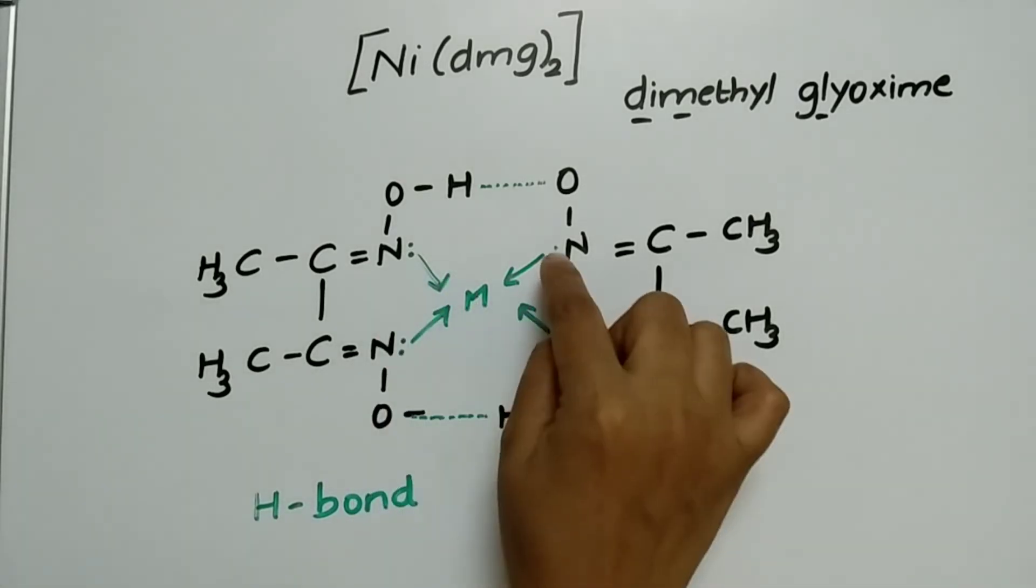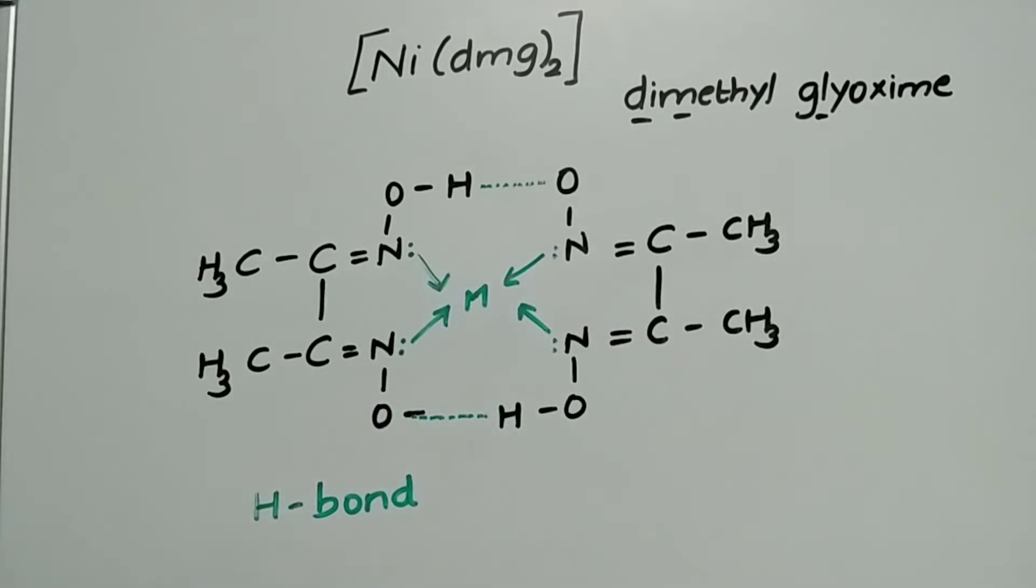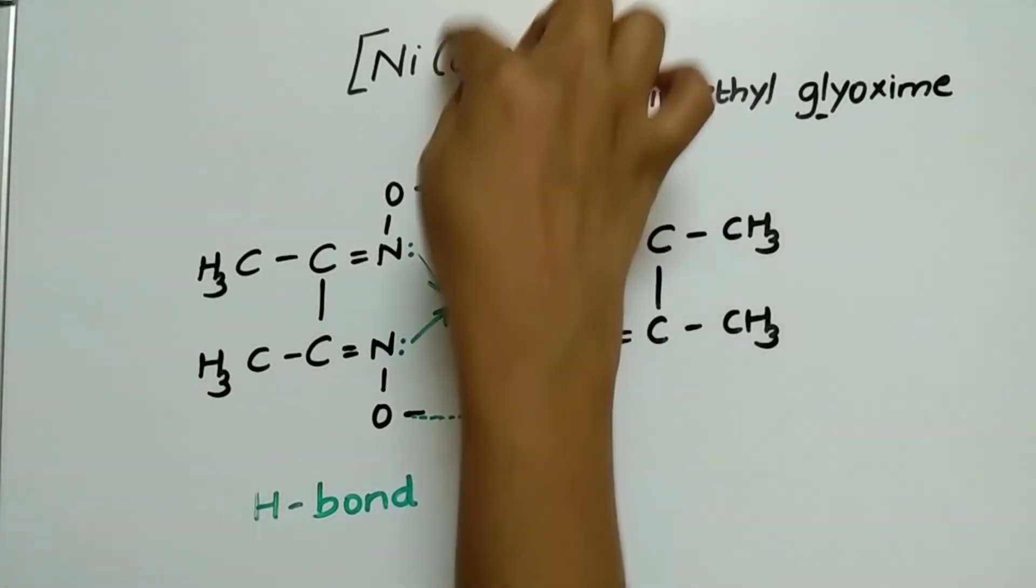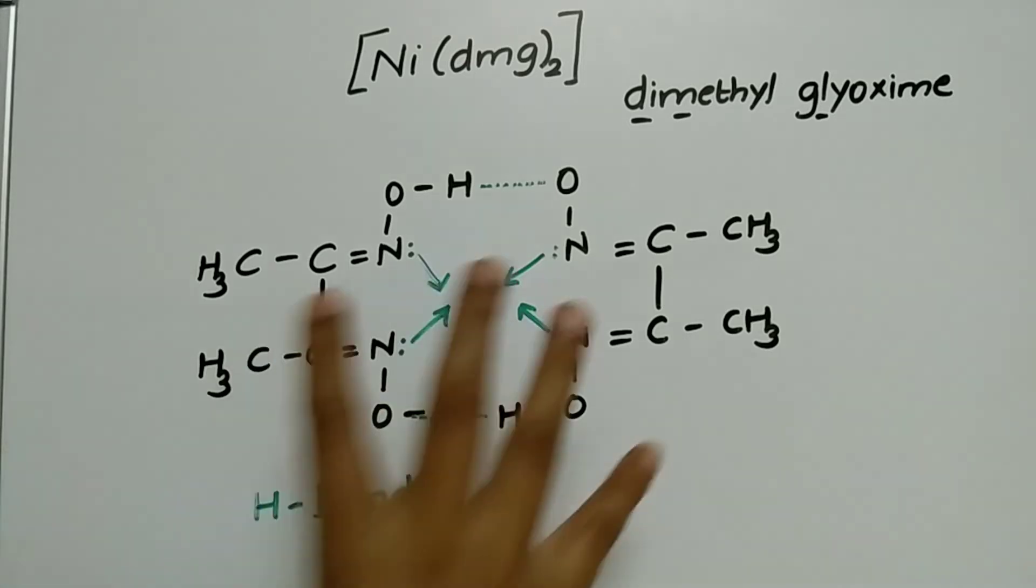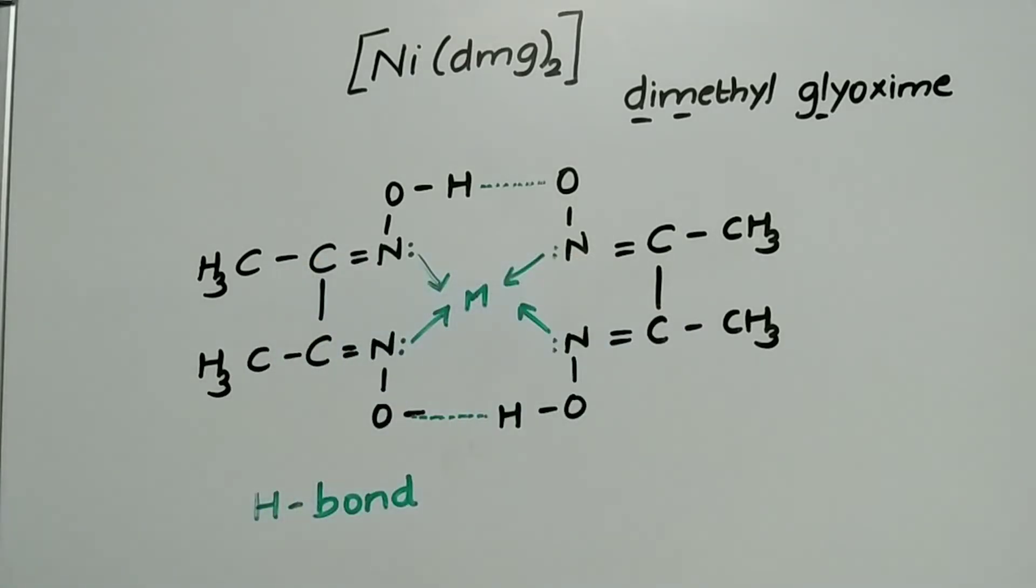1, 2, 3, 4. So how many orbitals, vacant orbitals do we need for the ligand DMG? 4. Let us now we will go to the VBT to find the properties of this complex.